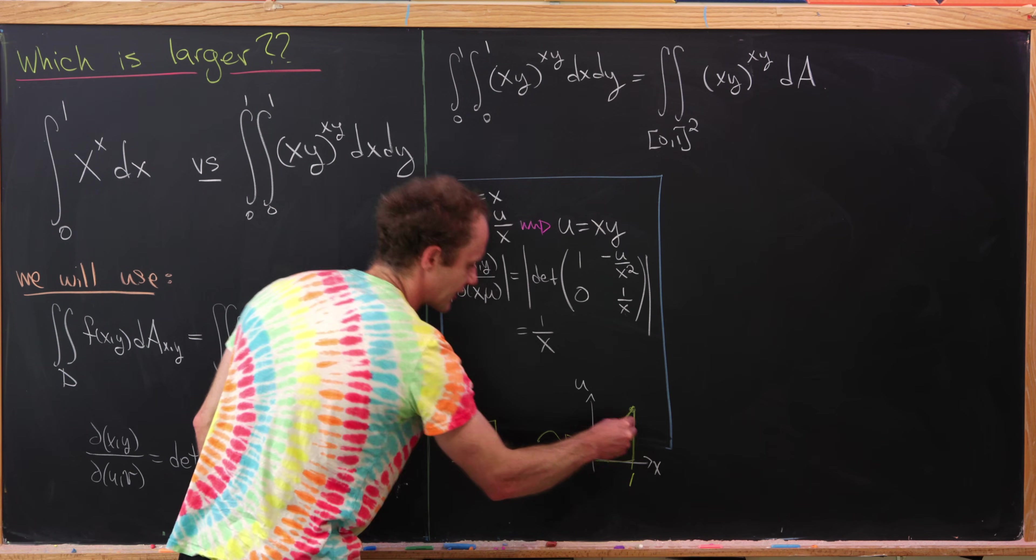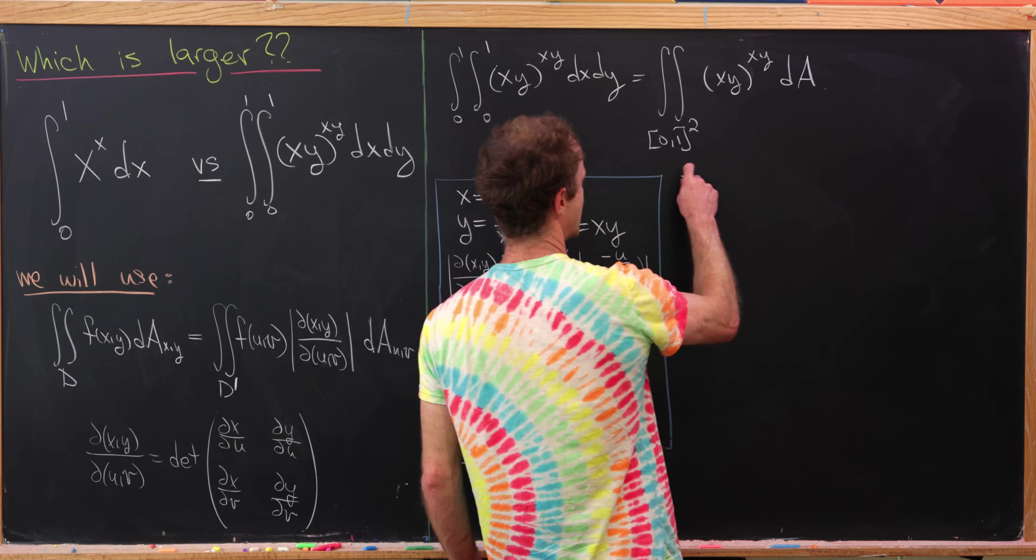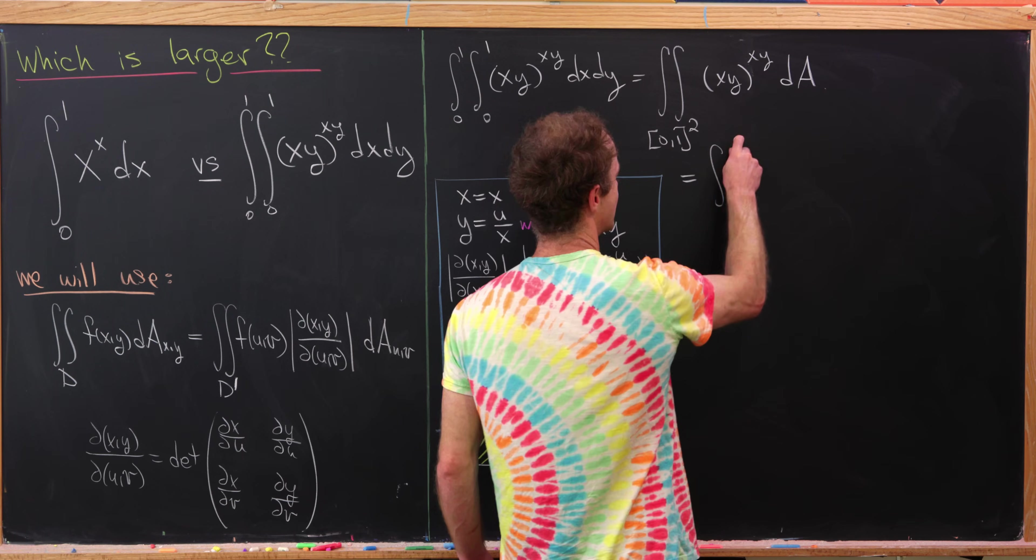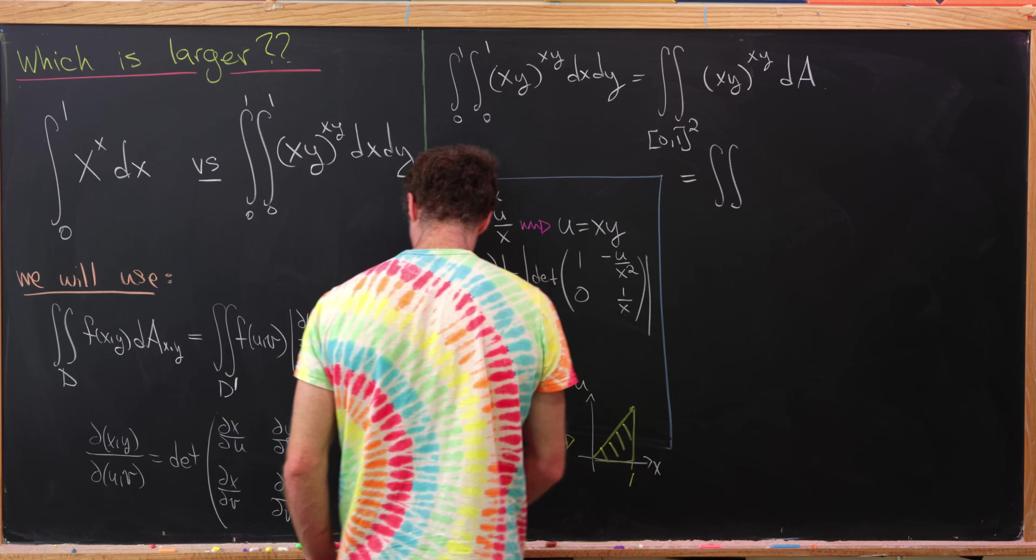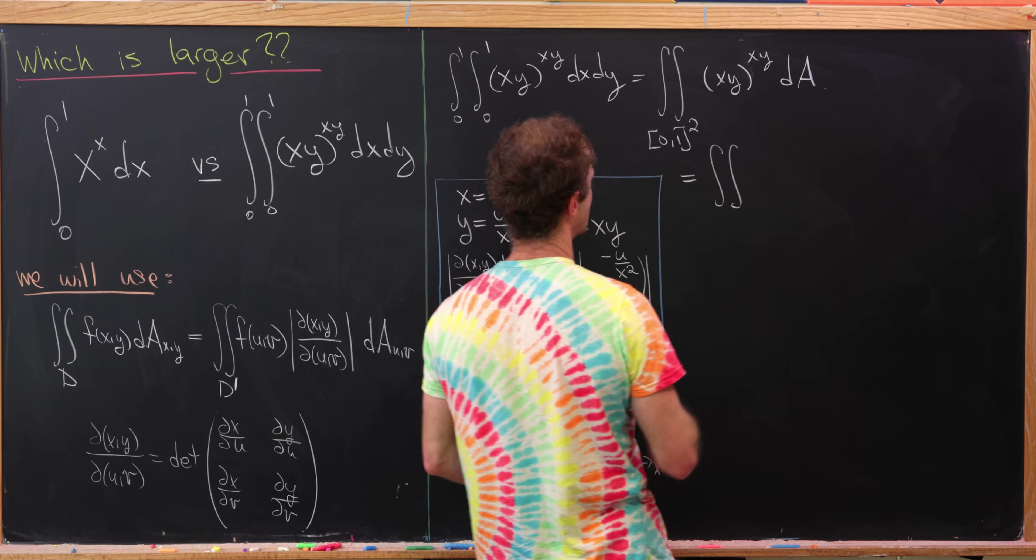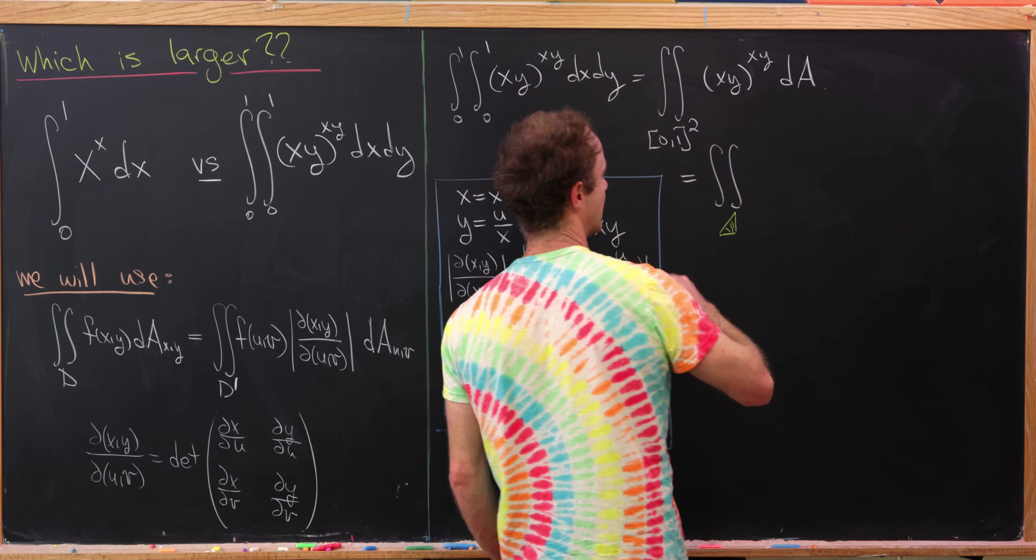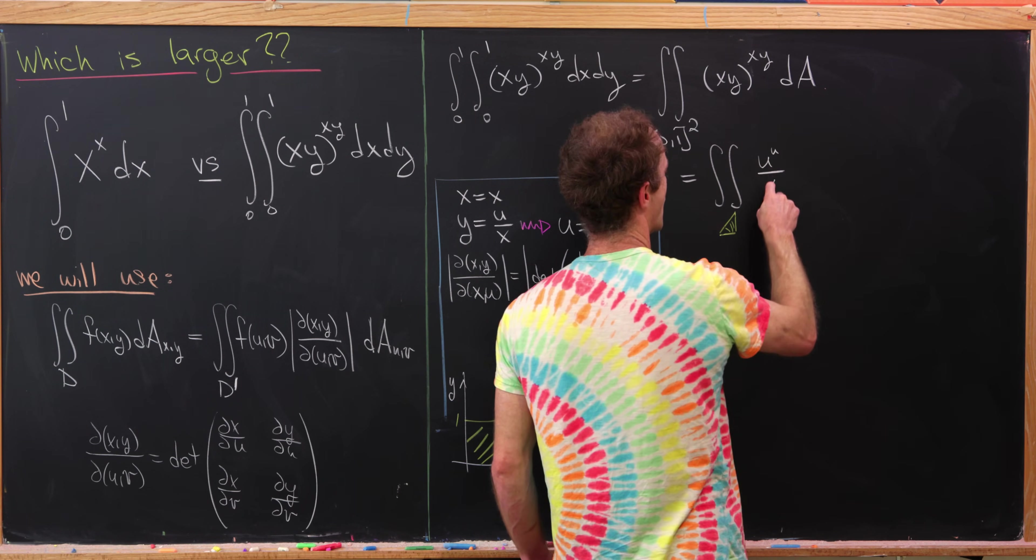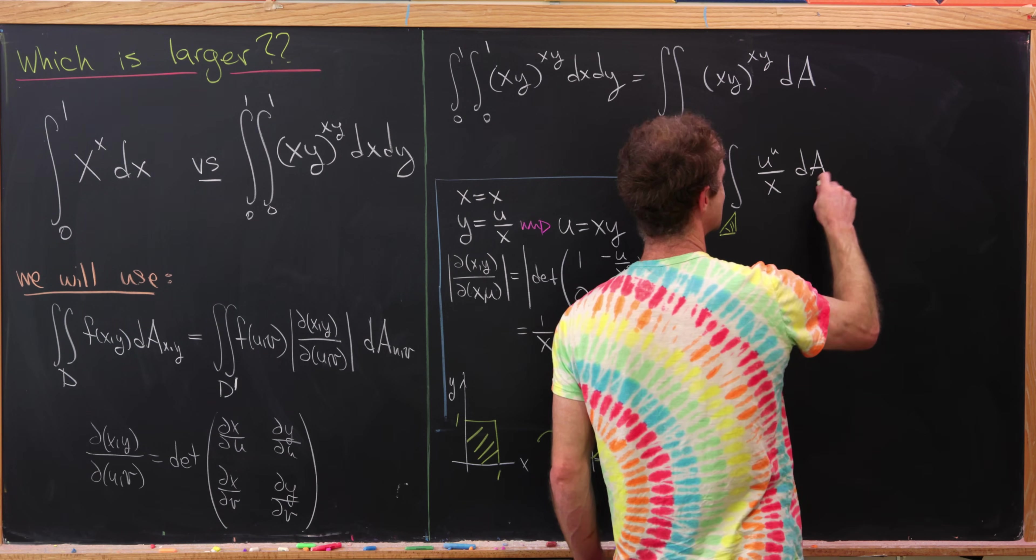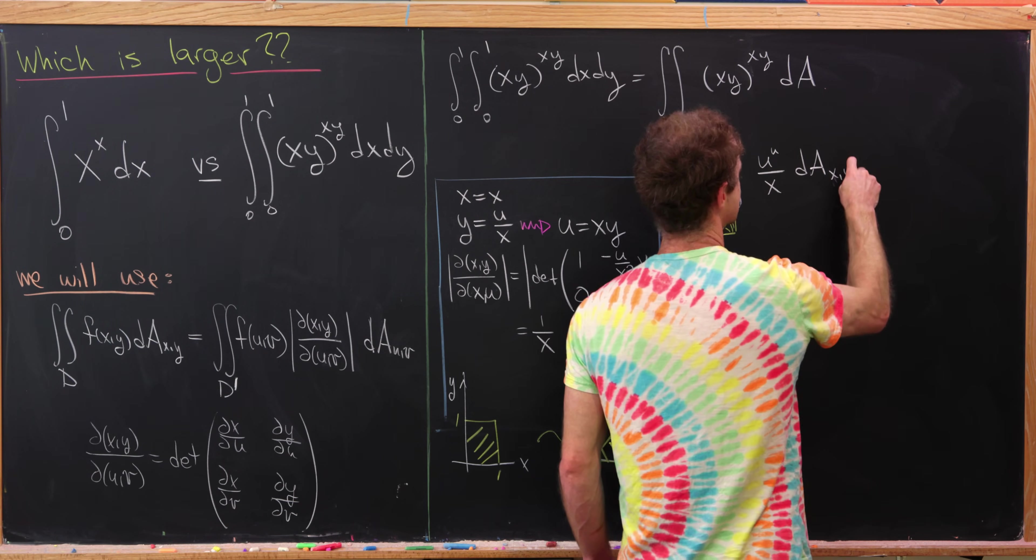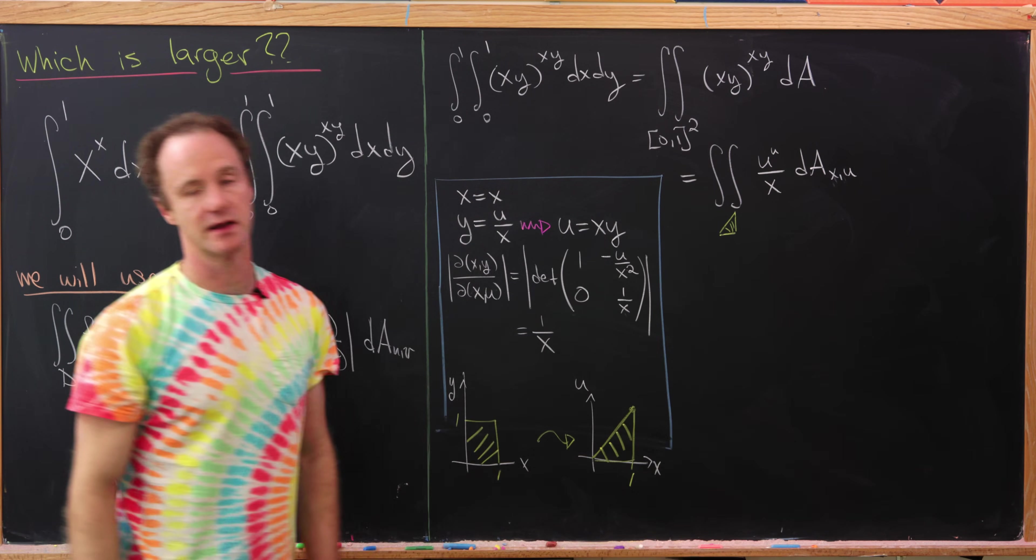And so putting that all together, we have the following triangle. Now we can rewrite this as the double integral over that triangle. I'll make a picture of this triangle of, well, it'll be u to the u over x. And then I'll just put dA and now we're in the x u plane. Nice.